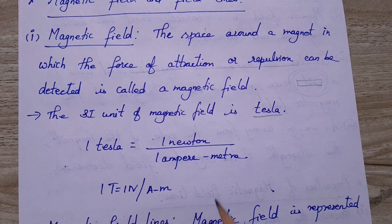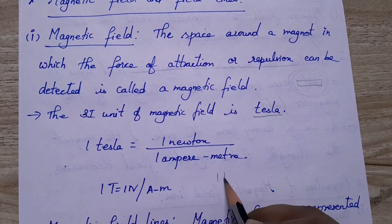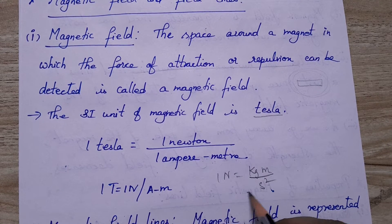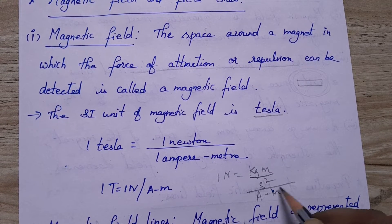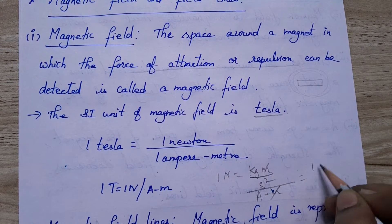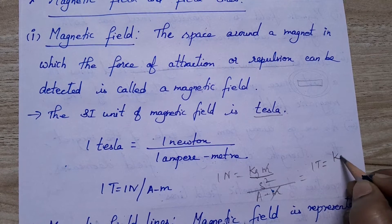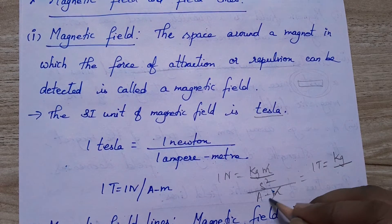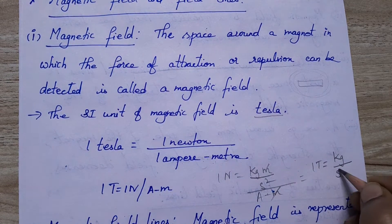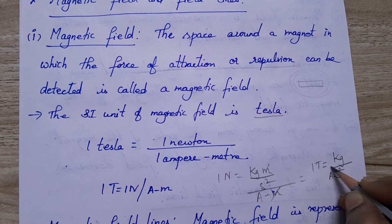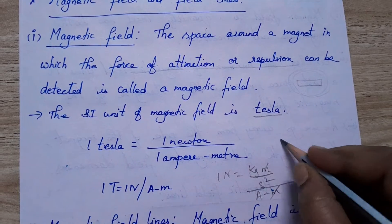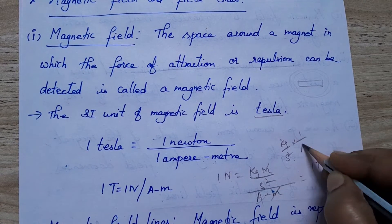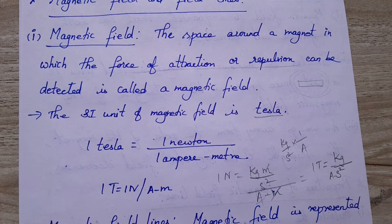We can rewrite one Newton as kg·m/s². Dividing by ampere·meter, the meters cancel. So we can rewrite one Tesla as kg per ampere·second squared, which can also be written as kg per amp·s².